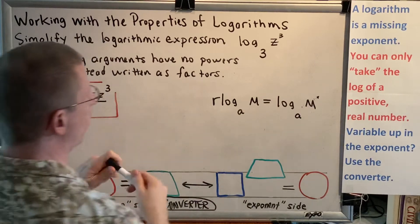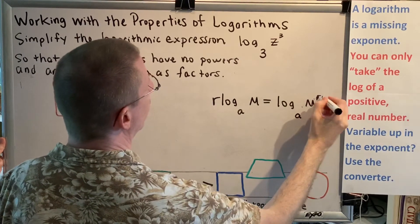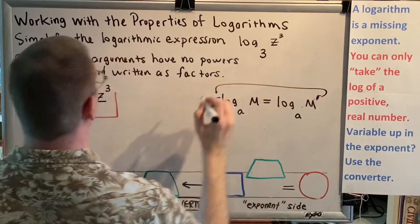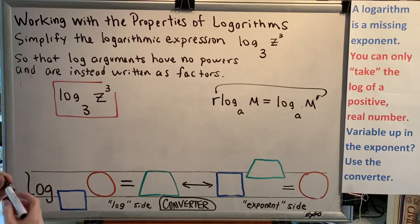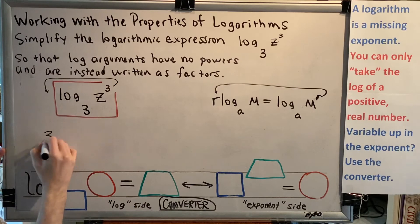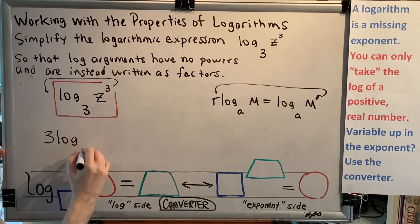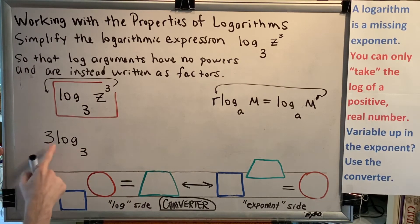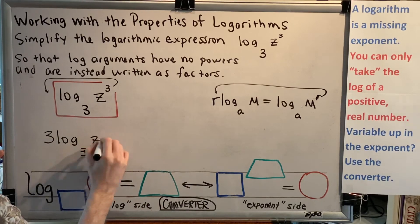So we're going to pick up this r, move it outside the brick and in front of the log. Doing the same thing here, we're going to pick up this 3, move it outside the brick, and put it in front of the log. So we get 3 log base 3 of z.